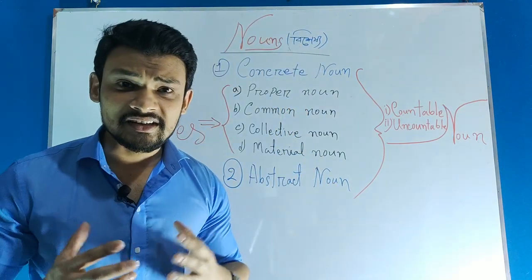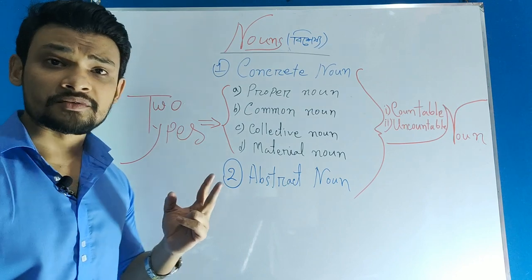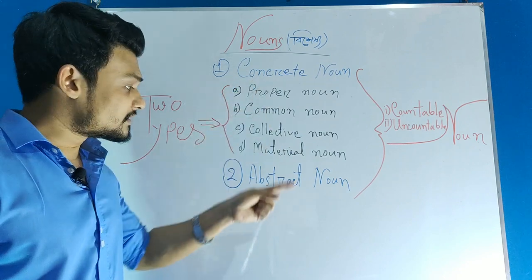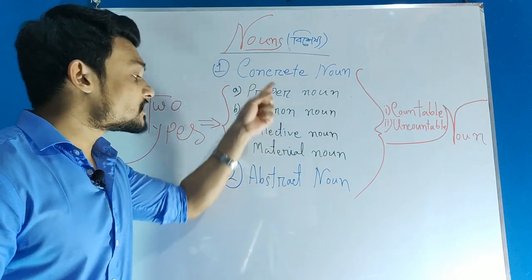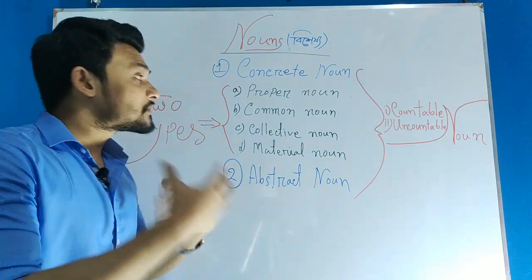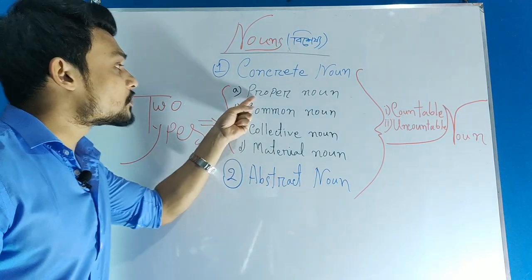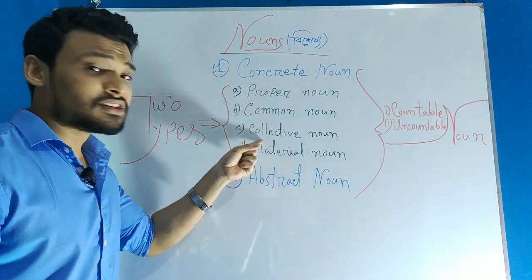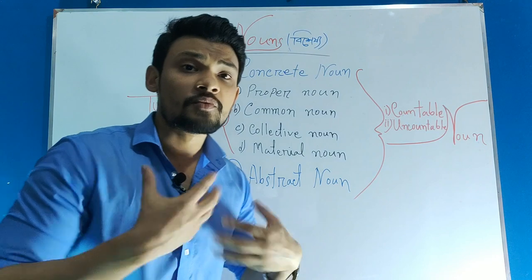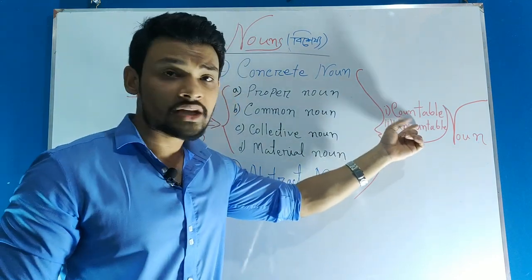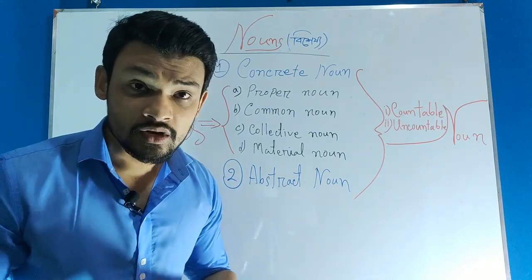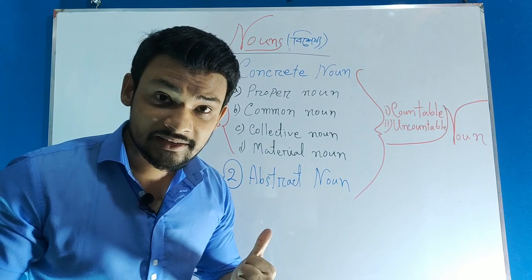There are two types of nouns: one is concrete noun and another is abstract noun. Concrete noun is divided into four more parts: proper noun, common noun, collective noun, and material noun. Besides these, there are two more nouns — countable noun and uncountable noun. I will discuss each and every noun in brief in this video.